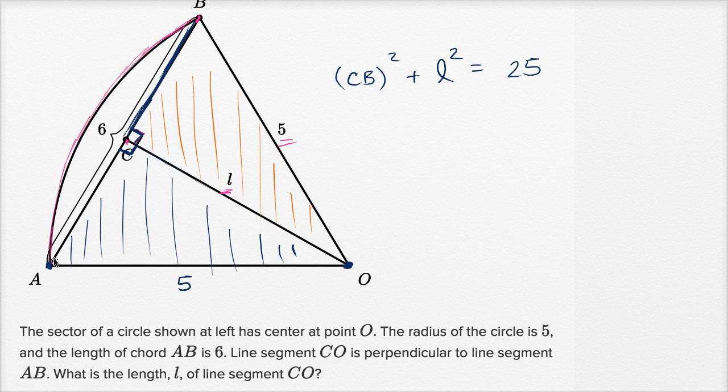So what's the length of AC? Well we could use the same idea. We can relate AC, L, and five. So by the Pythagorean Theorem, the length of segment AC squared plus L squared is equal to 25. So when you see it in these terms, you see very clearly that AC is going to be equal to CB.